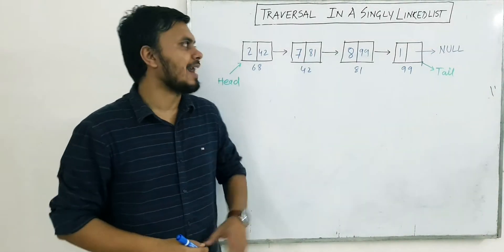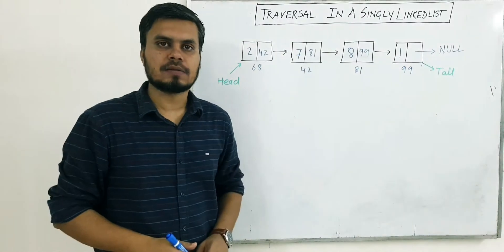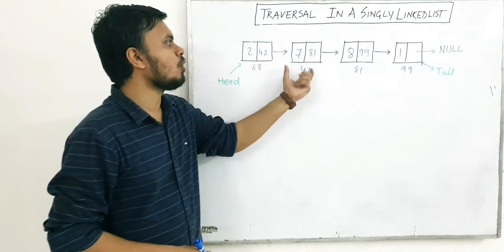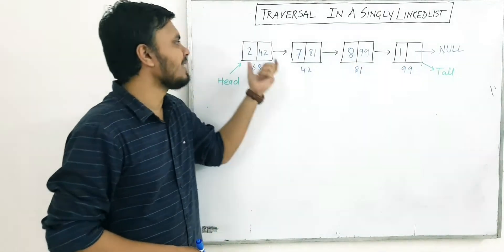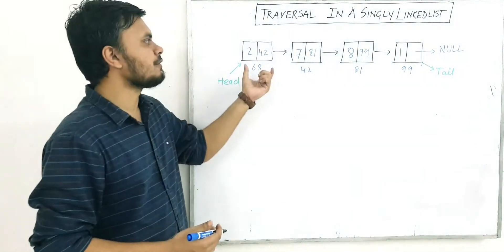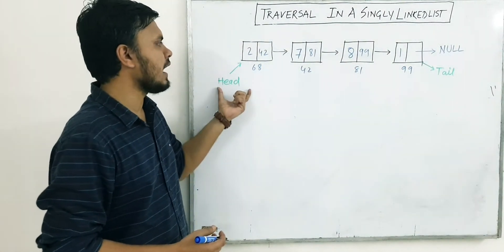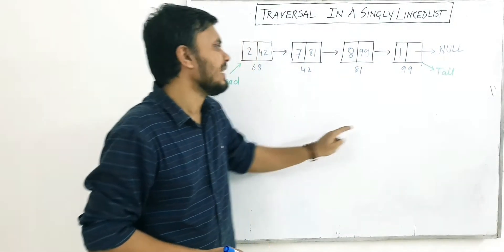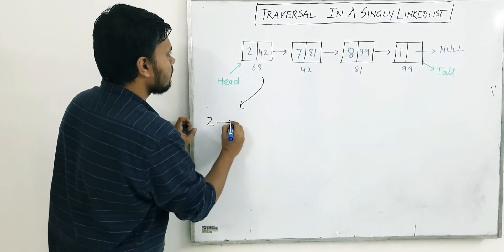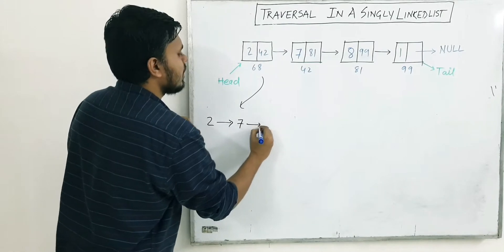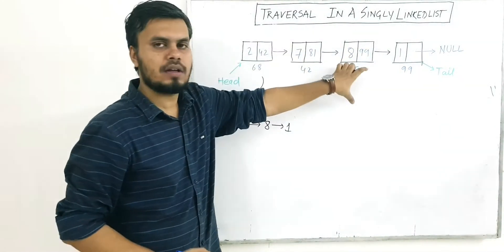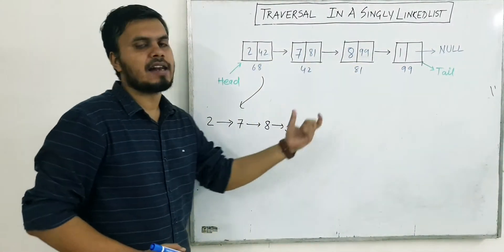In this video we will learn traversal in a singly linked list. We will traverse through every node of the linked list and print out the value of that particular node. Suppose if we have this linked list where this is the head node and this is the tail node, the output of traversal will basically look like this: 2, 7, 8, and 1.